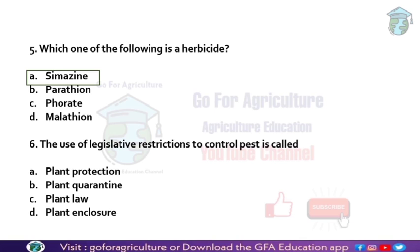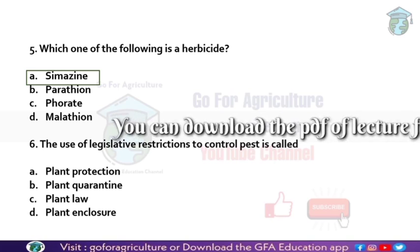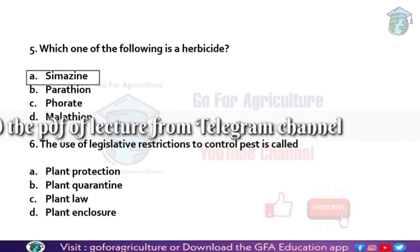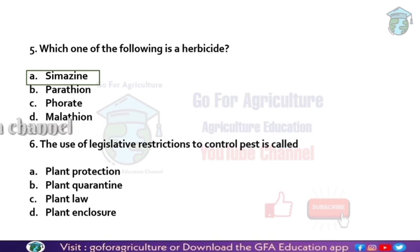Next question: the use of legislative restrictions to control pests. Legislative restrictions means using laws legally for pest control, and this comes under plant quarantine. For example, if a new variety is being introduced from America into India, India will quarantine the plant for some days. Scientists then observe whether there are any new pests or diseases, and only if it's safe will they release it into India.